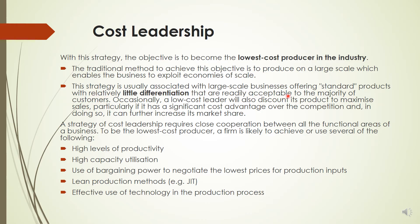This strategy is usually associated with large-scale business offerings — standard products with relatively little differentiation that are readily acceptable to the majority of customers. Occasionally, a low-cost leader will also discount its product to maximize sales. Cost leadership strategy requires close cooperation between all functional areas, including high productivity, high capacity utilization, use of bargaining power to negotiate the lowest prices for production inputs, lean production methods like just-in-time, and effective use of technology.